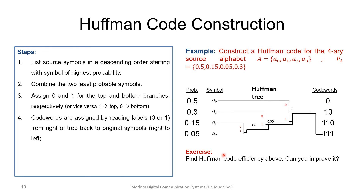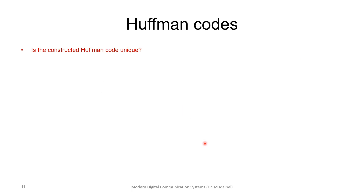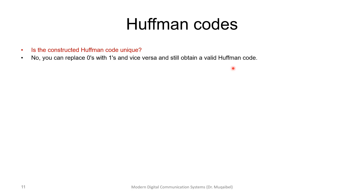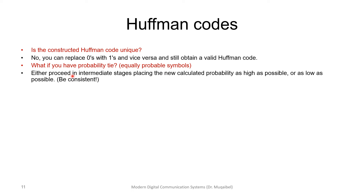Find the Huffman code efficiency: compute the entropy and the average codeword length, then evaluate the efficiency. Is the Huffman code unique? No — we can swap zeros and ones and still have a valid Huffman code. Also, if there is a probability tie in intermediate stages — for example two nodes both at 0.5 — we can order them either way, giving non-unique but equally valid Huffman codes.